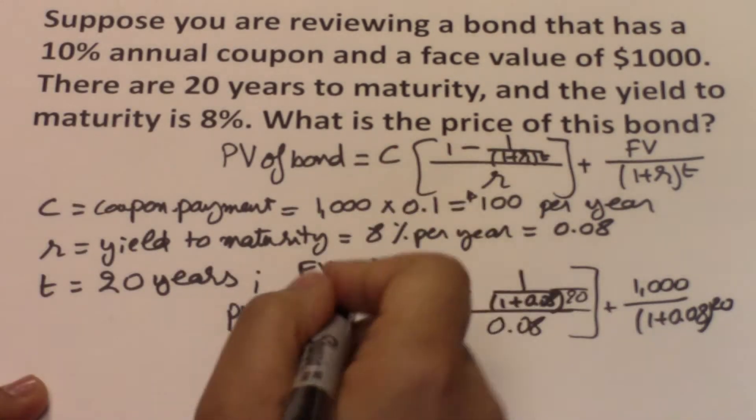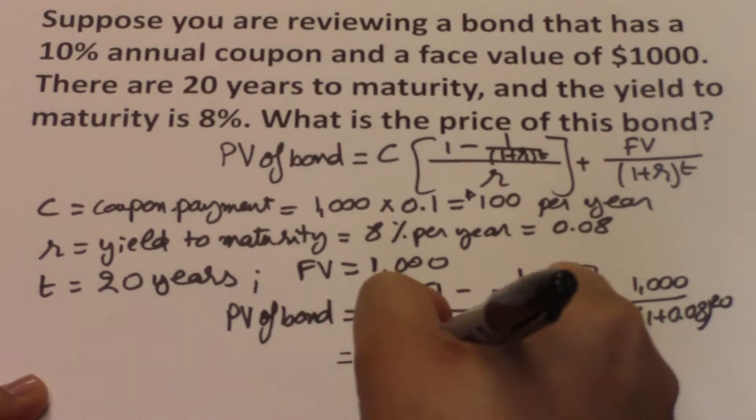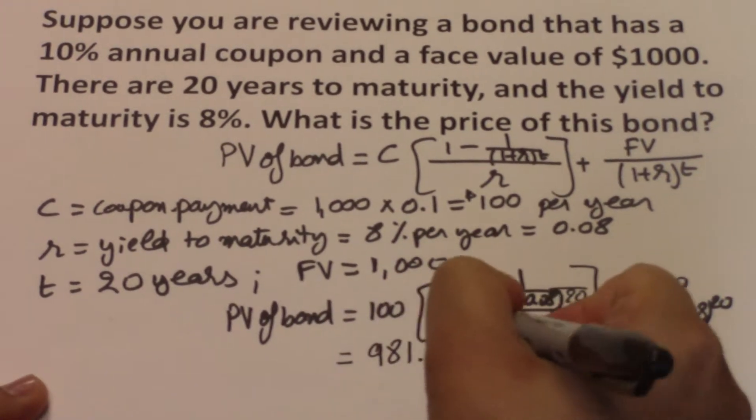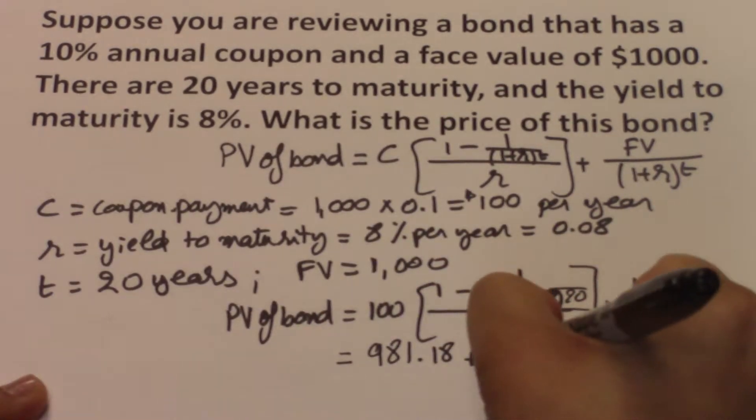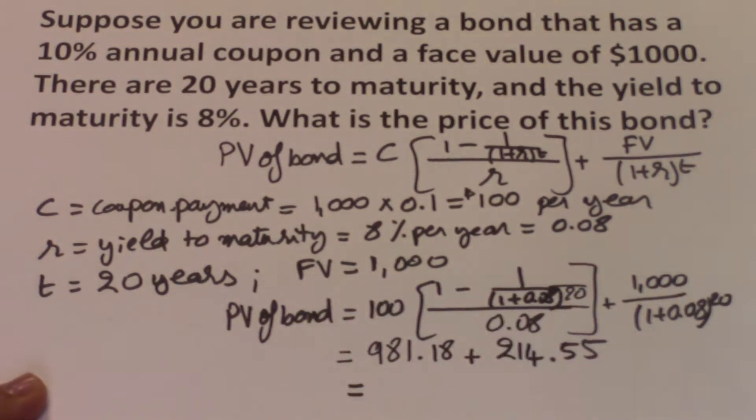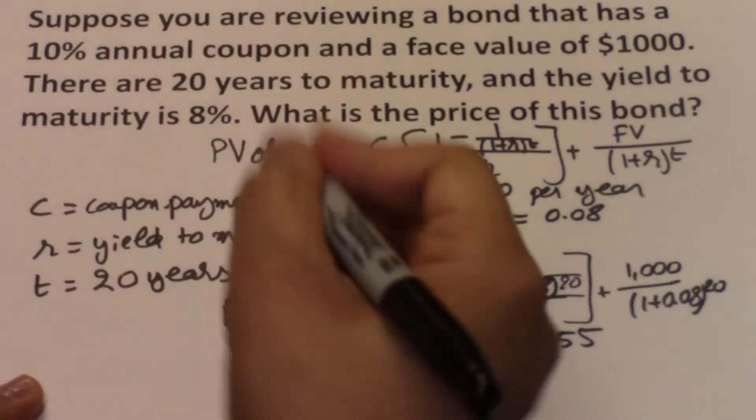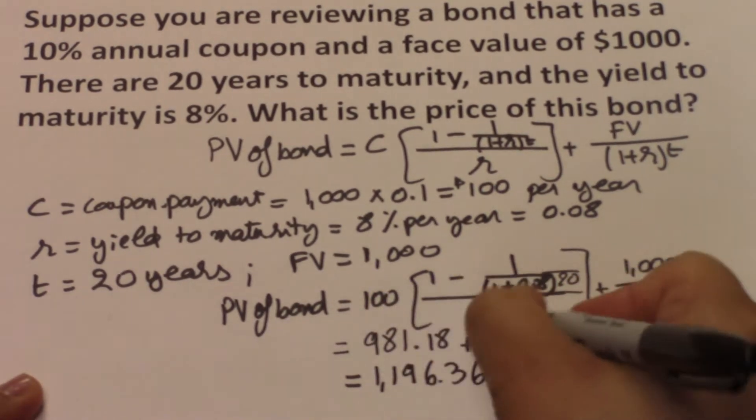And here if you were to calculate the first part of the equation, you'll get $981.18 plus the second part of the equation is $214.55. You add both numbers together and you'll get $1,196.36.